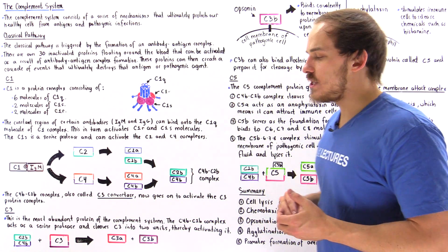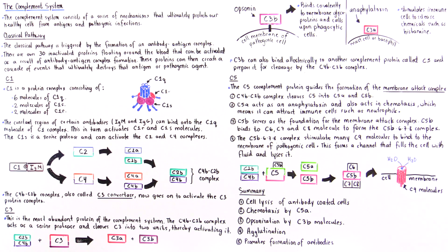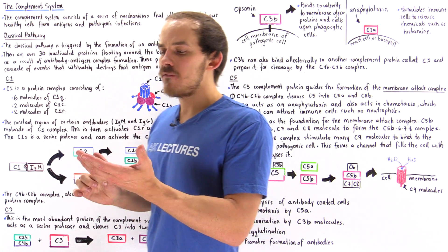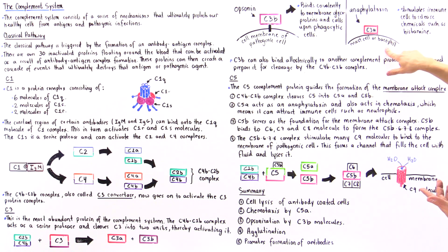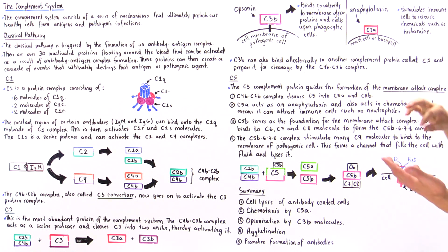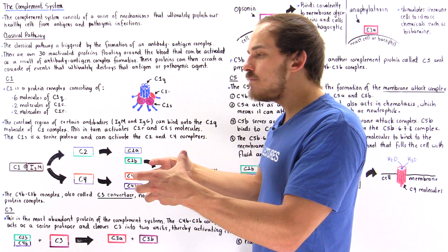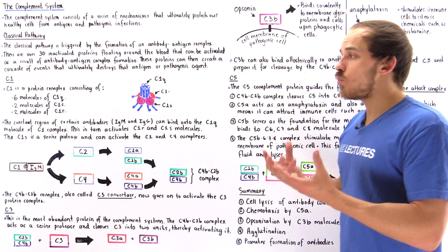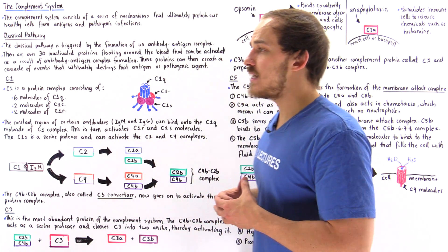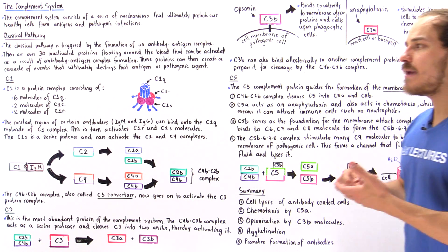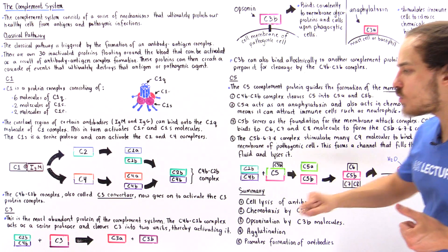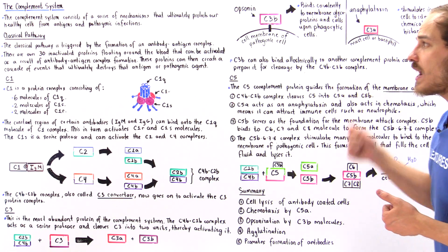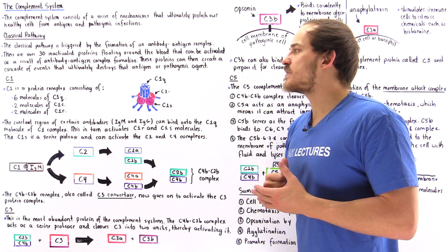What exactly is the function of C3A? C3A is a molecule known as an anaphylatoxin. What an anaphylatoxin does is it binds onto the membrane of either mast cells or basophils, and it stimulates those cells to release the immune chemical known as histamine. Histamine dilates blood vessels and makes capillaries much more permeable to fluid, increasing blood flow to the infected area so that immune cells and immune chemicals can reach that area much more quickly. C3A basically increases the rate at which we can protect our body from pathogenic infections.